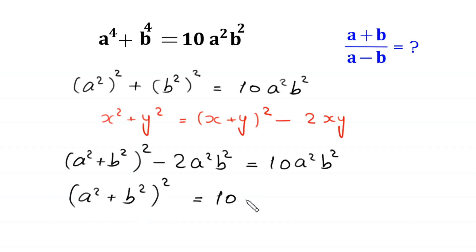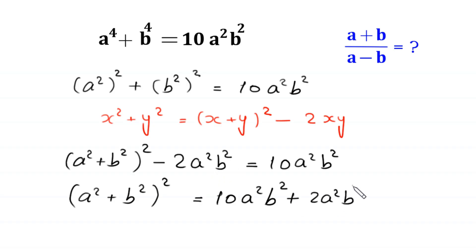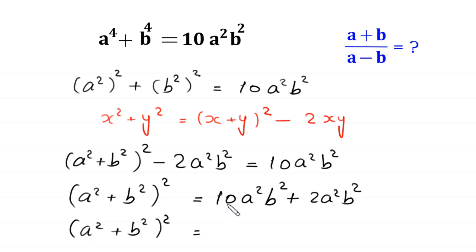Next, (a squared plus b squared) whole squared is equal to 10 times a squared b squared, and the negative 2 a squared b squared moves to the right becoming positive 2 a squared b squared. So (a squared plus b squared) whole squared equals 10 plus 2, which becomes 12 times a squared b squared.